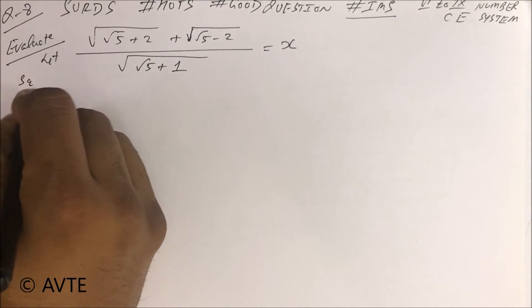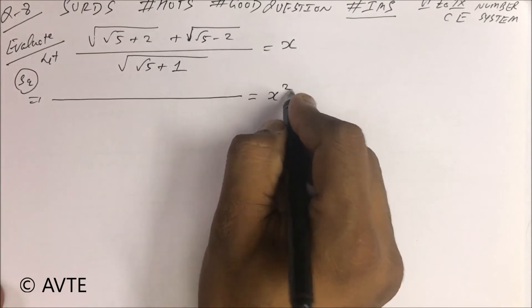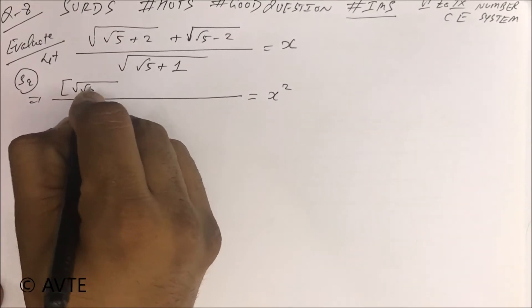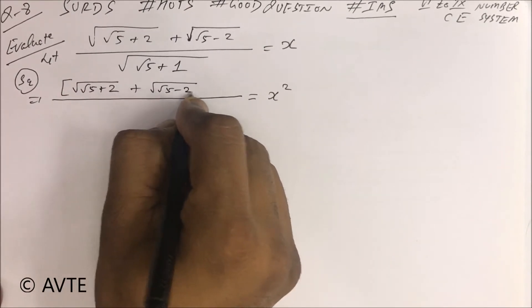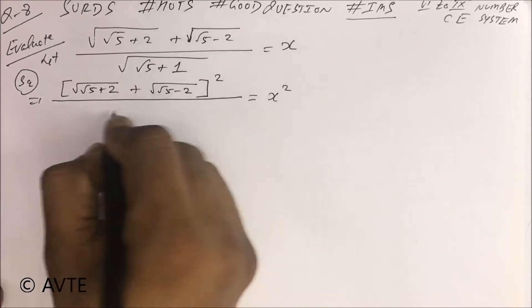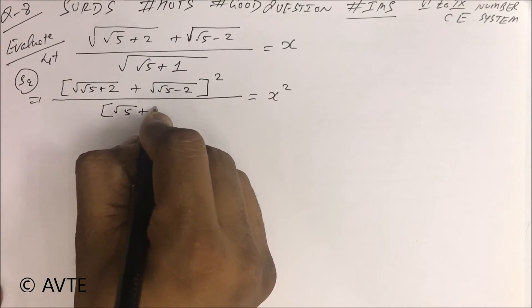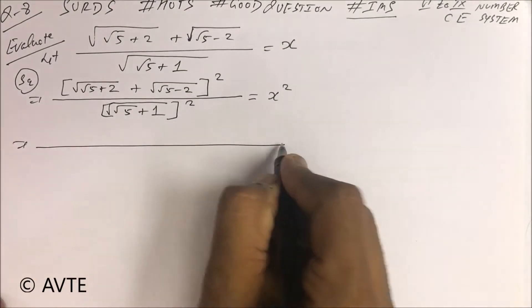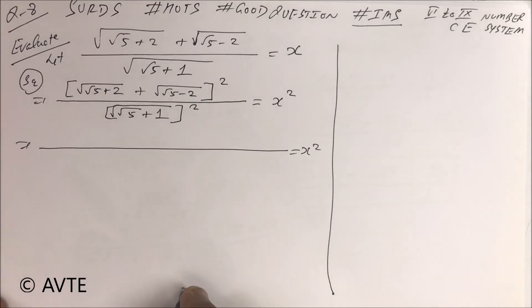Squaring both the sides. Consider this as (√A + √B)² and this is... so guys this is wrong. You have to write like this, square. So in the denominator, in the denominator...